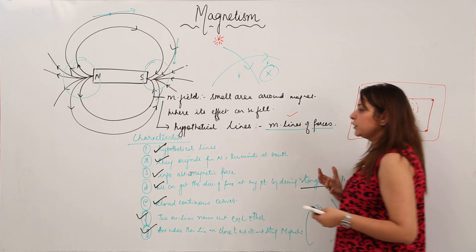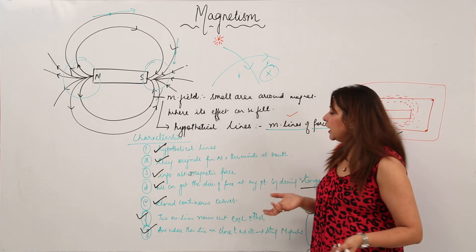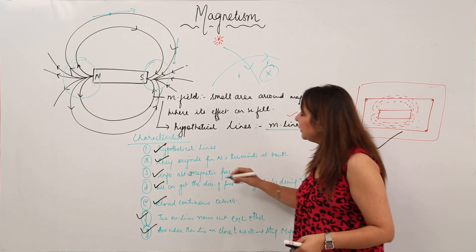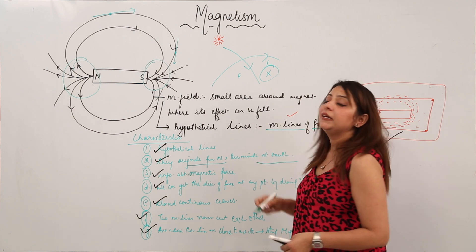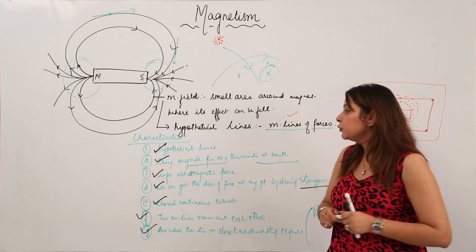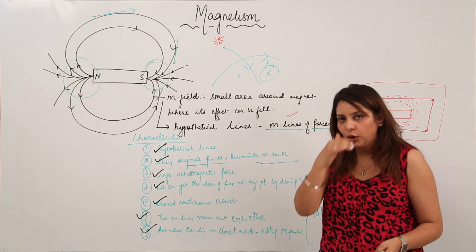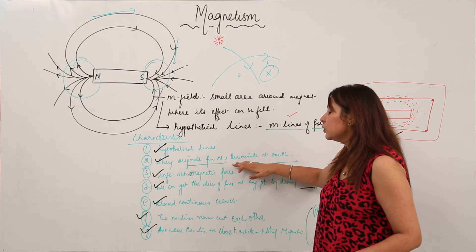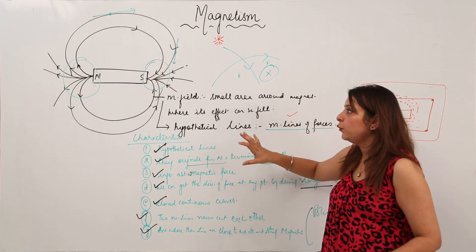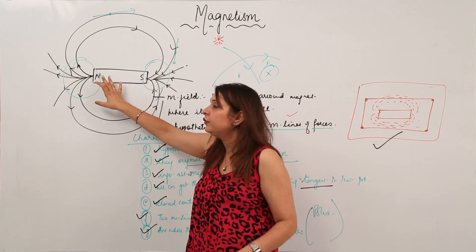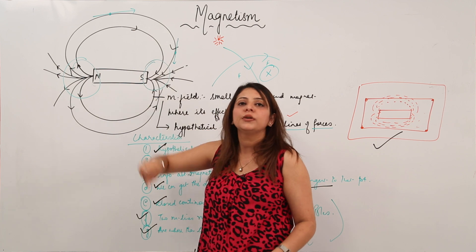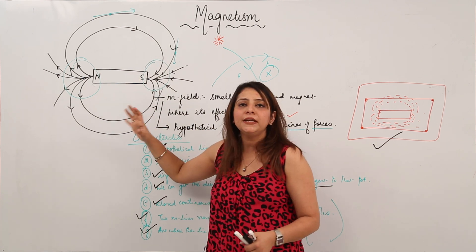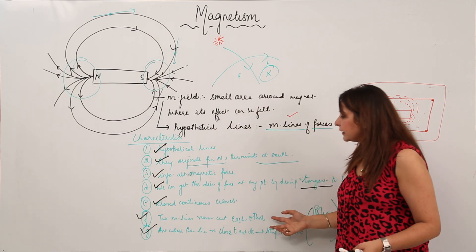If asked why magnetic lines always originate from north and terminate at south — it is an assumption, not a definitive answer. It is assumed that if a north pole were free to move, it would move towards the south pole due to attraction. That is why the lines are said to originate from north and terminate at south.